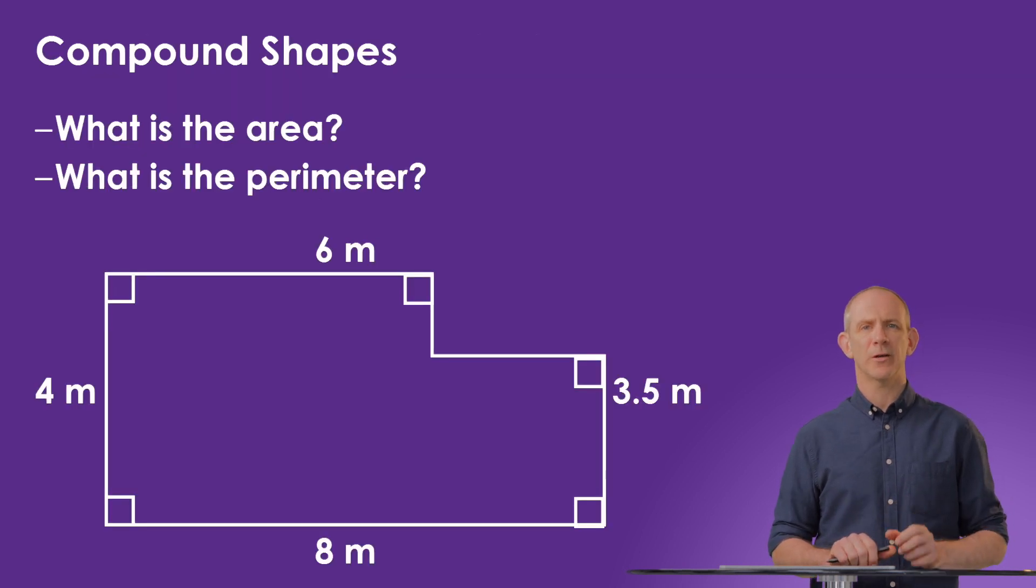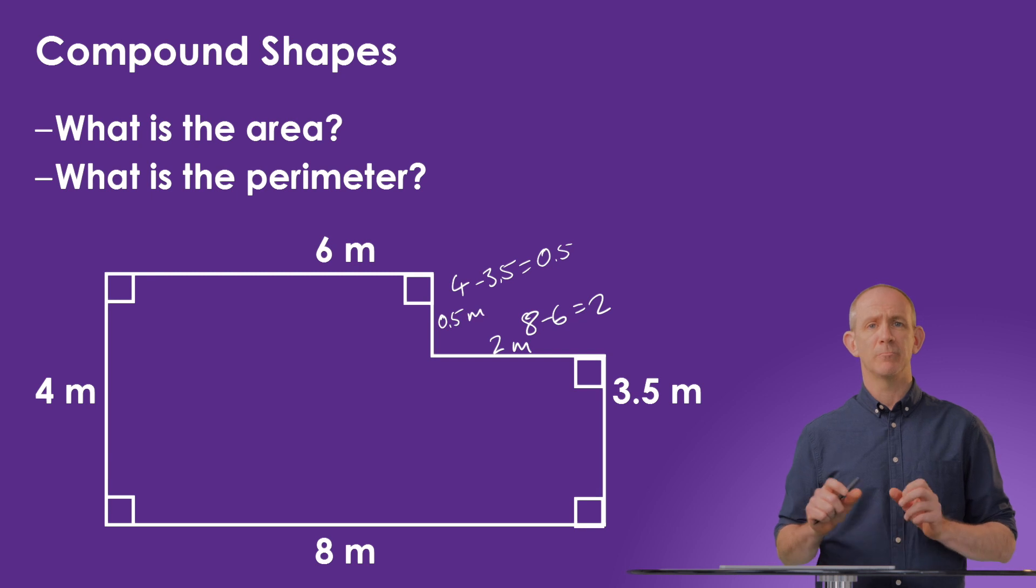So here we've got a compound shape, and we're asked to find the area and the perimeter. First, we should notice that we have to calculate the missing dimensions up in that top right hand corner. As we're told that all of these are right angles, we can calculate that as 8 take away 6 would be 2 meters for this one, and this one would be 4 take away 3.5, to give us half a meter, or 0.5. We can only do this because they are right angles.